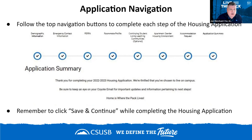Remember to click the Save and Continue button on each page. If you can't complete the application in one sitting, you can save and come back later. After submitting, you'll get an application summary confirming you've completed the 22-23 application. Keep a lookout for your MyCoyote email — that's where all housing correspondence will go, so check it regularly.